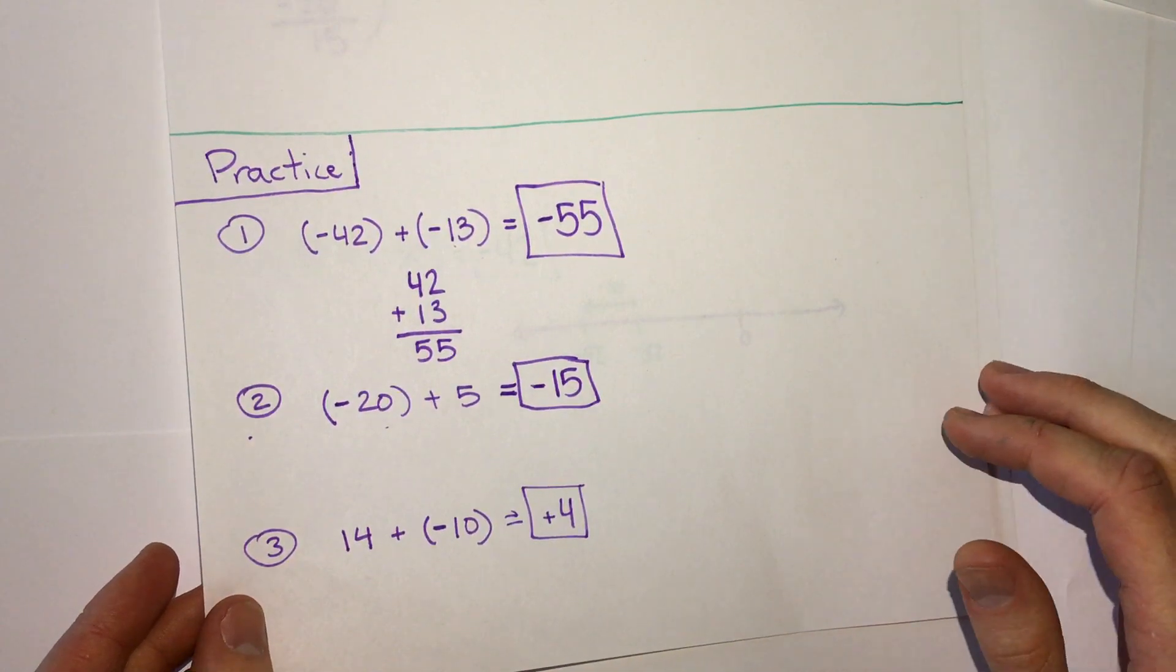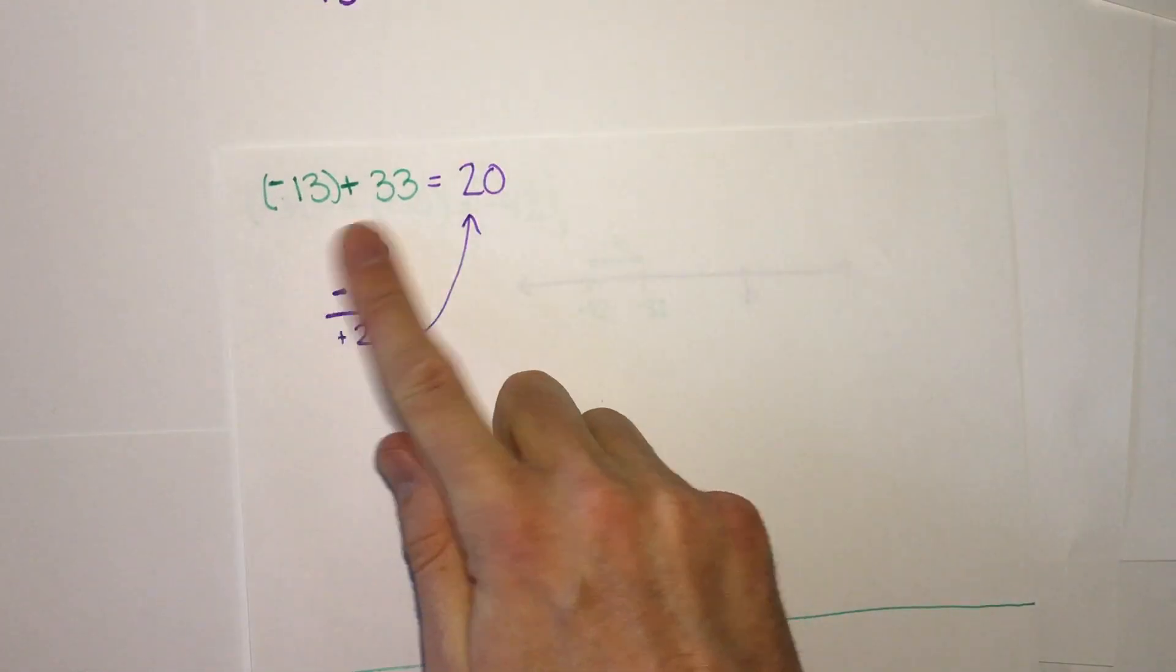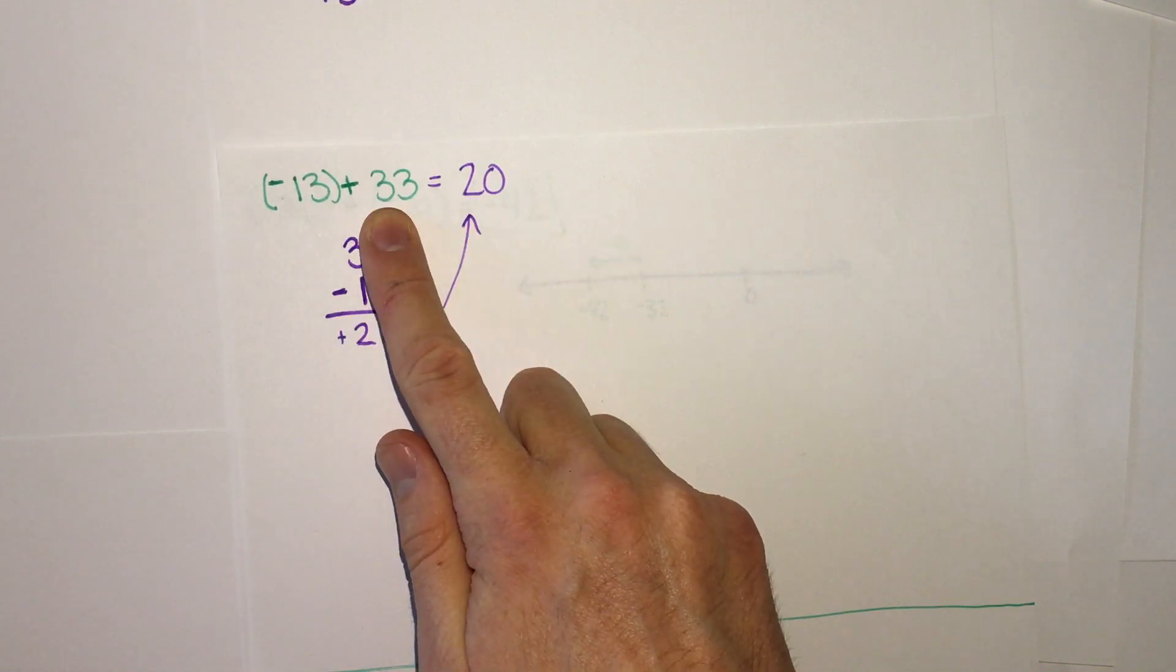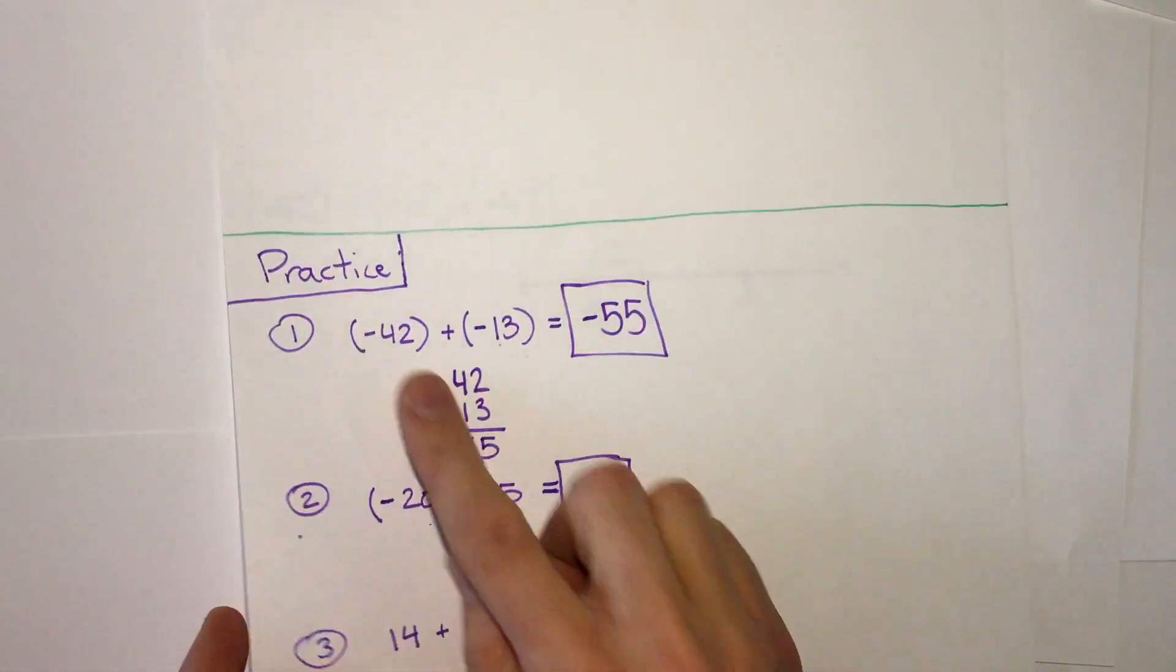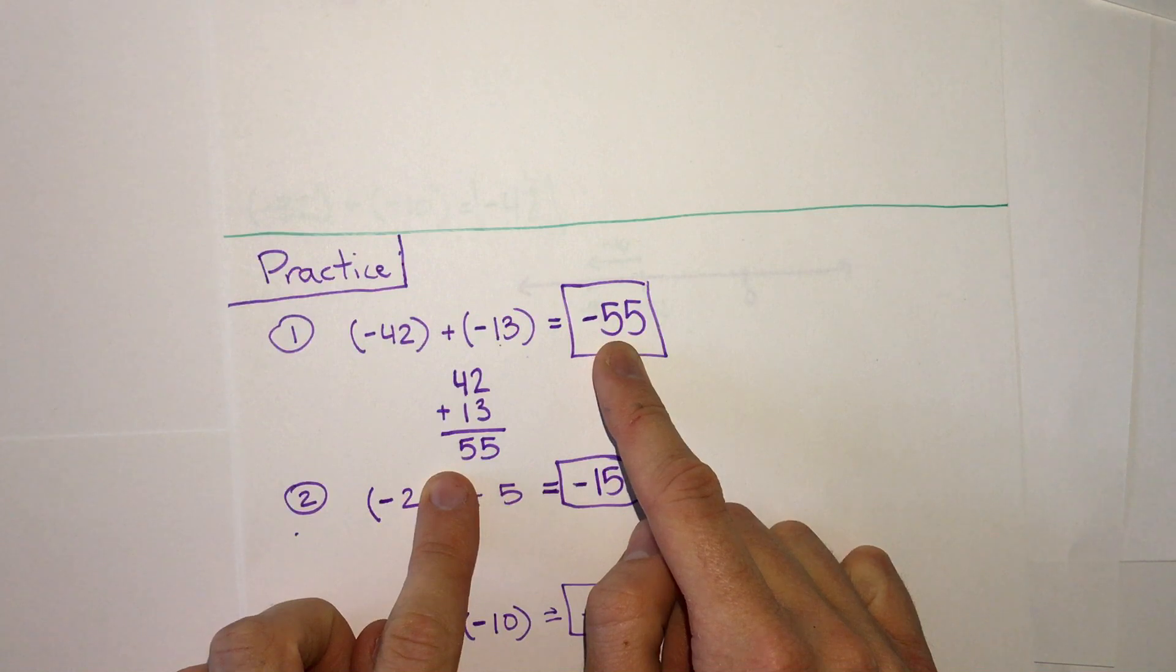The key to remember is if you have a negative and a positive, subtract the numbers and the answer is the sign of the bigger number. And if you have two negatives, add them together and your answer is negative.